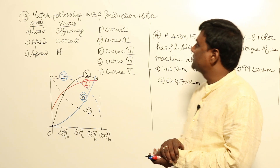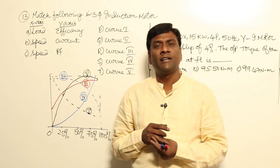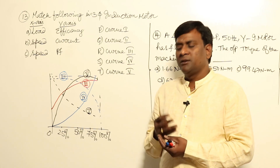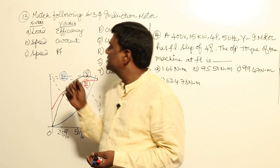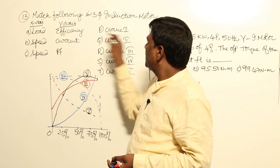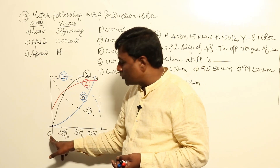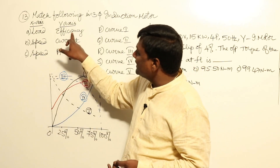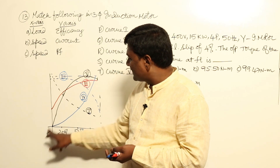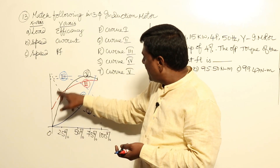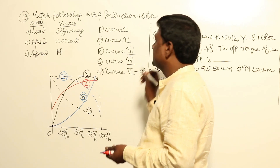In this question — a match-the-following — we discussed torque, power, power factor, current, and efficiency characteristics in previous sessions. I have included this because one popular publication has published a wrong answer. The question is straightforward: x-axis is load (percentage of full load), y-axis is efficiency. At no load, efficiency is zero, so the efficiency curve must start at zero — that corresponds to curve 5, which is black. So curve T maps to answer A.